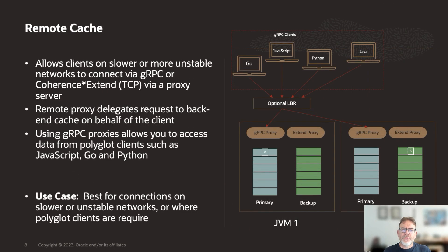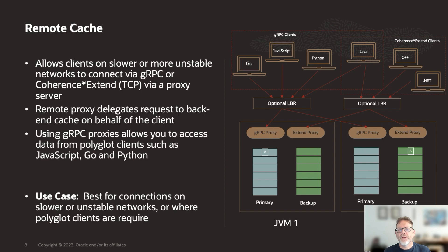Remote caches are any out-of-process caches connected via either gRPC or Coherence Extend via proxy server. The remote proxy server delegates requests to the back-end cache which can be distributed, view or federated. gRPC remote caches use a gRPC proxy server which allows you to connect from polyglot clients such as JavaScript, Go or Python. Remote caches are best for connections on slower or unstable networks.